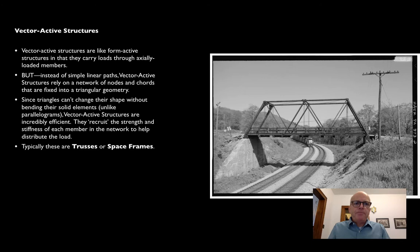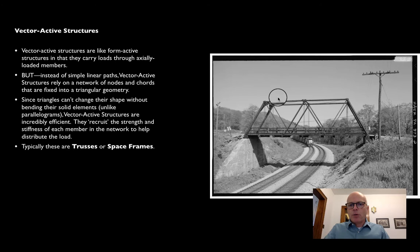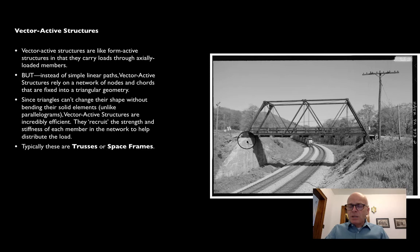To begin with, we'll talk about how vector active structures are like form active structures. They carry loads through axially loaded members — compression and tension — but vector active structures arrange these elements into networks of what are called nodes and chords. The nodes are where all of the pieces come together. The chords are the actual linear elements that hold these nodes in place and carry loads through a network out to the abutments at either end.